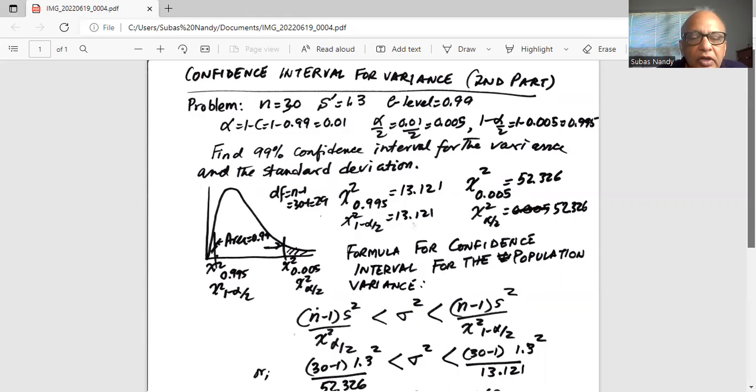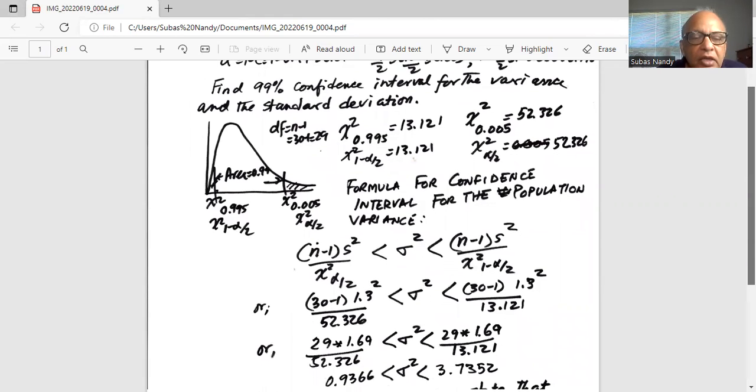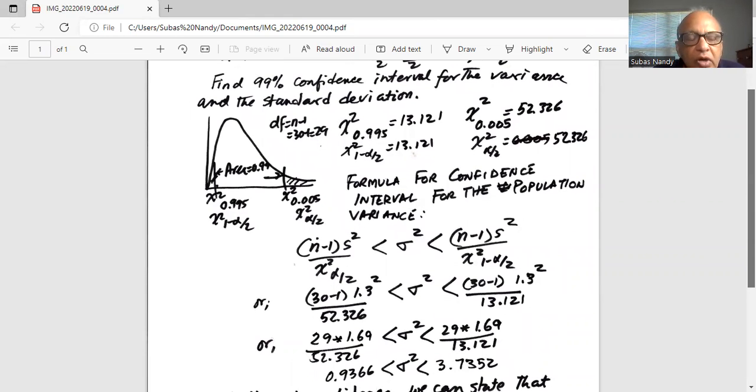Now the formula for a confidence interval for the population variance is given by (n-1)s² divided by chi-square α/2 less than σ². The σ² is the variance. And the upper boundary is (n-1)s² divided by chi-square 1 minus α/2.